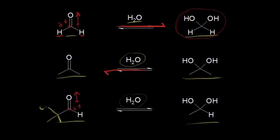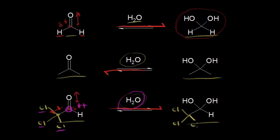One thing you can do is add an electronegative atom like a halogen. Let's add three chlorines to the carbon adjacent to our carbonyl carbon. Those electron-withdrawing groups — those very electronegative atoms — withdraw electron density away from the carbonyl carbon, making it even more partially positive. The more positive you make that carbonyl carbon, the more electrophilic you make it. Therefore, the nucleophile — water — is going to attack more readily. You make it even more reactive, pushing the equilibrium even further to the right and forming more product. You could also do this with ketones to make them much more reactive.